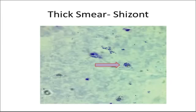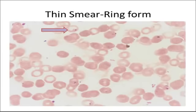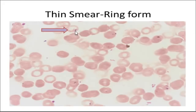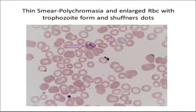Now we go to the thin smear. I apologize for the poor quality of this image — the ring form is not very well seen here, though it was seen clearly under the microscope. We can make out the chromatin dot, a trophozoite form, and Schüffner's dots.